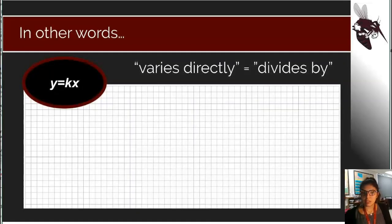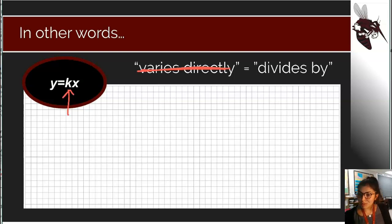What we teach students is that when you see varies directly we actually want you to cross it out in the word problem and write divides by or divided by because that's going to help us find this constant of variation or the slope, a fancy name called constant of variation for these direct variation questions. So your constant is whatever comes before the word varies directly divided by whatever comes right after. That would create my constant of variation.